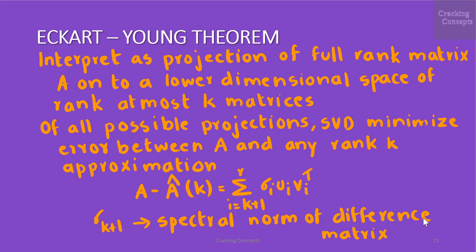We observe that the difference between A - Â_k is a matrix containing the sum of the remaining rank 1 matrices given by A - Â_k is equal to Σ_{i=k+1}^{R} σ_i u_i v_i^T. We immediately obtain σ_{k+1} as the spectral norm of the difference matrix.